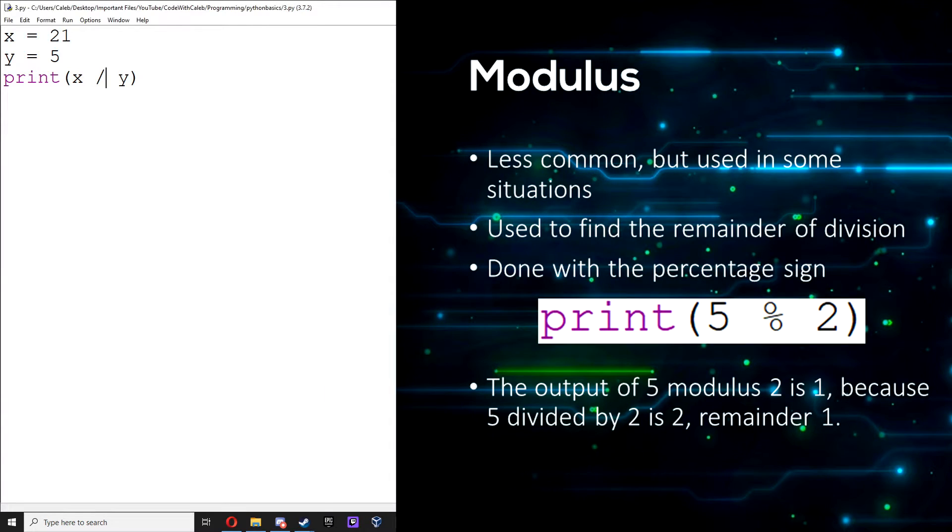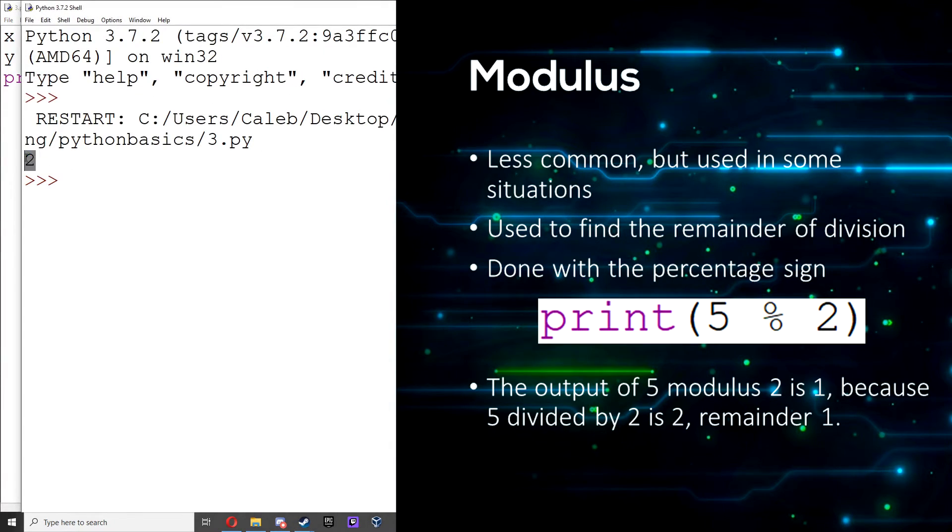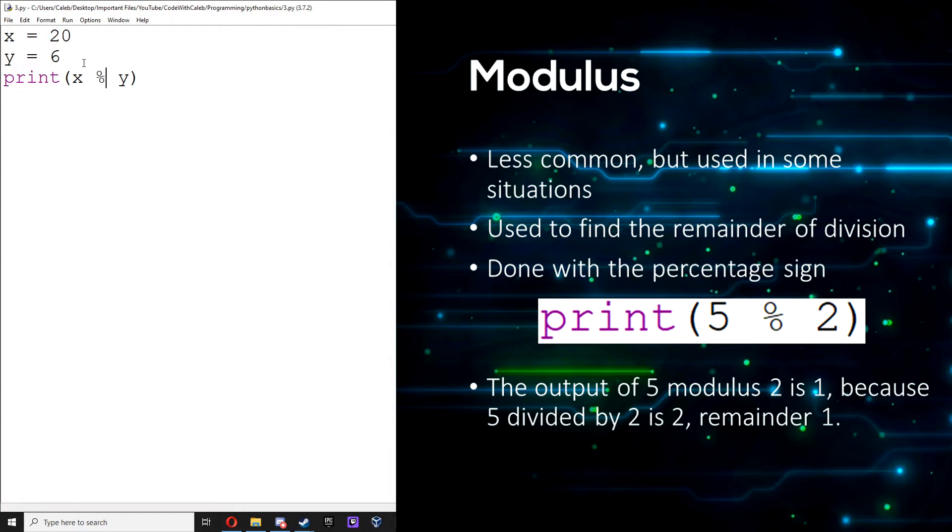There's also modulus. This is less common but is useful in some situations. Modulus is used to find the remainder of division. It's done with a percentage sign. Let's change x to 20 and y to 6. We can do x modulus using a percentage sign, y, and we will get 2 because 20 divided by 6 is 3 with a remainder of 2.